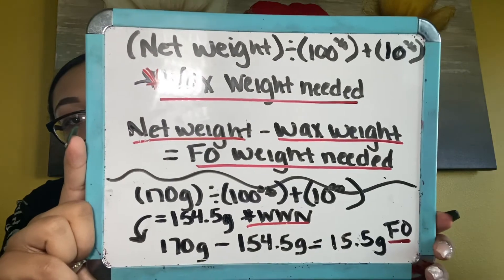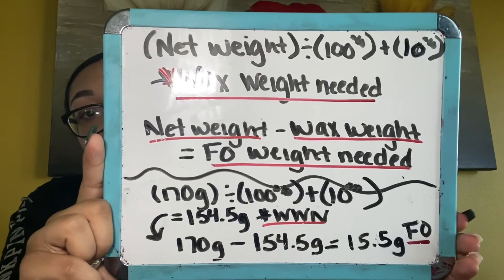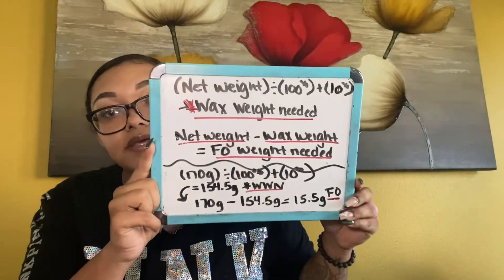Feel free to screenshot the formula or my example. To check your work, add 154.5 plus 15.5 — if it equals 170 grams, your math is correct. I know it's confusing starting out — we watch other people make candles without always knowing why they do what they do. I made a mistake in my last video and didn't even realize it until someone commented, so I wanted to give you the correct calculations.